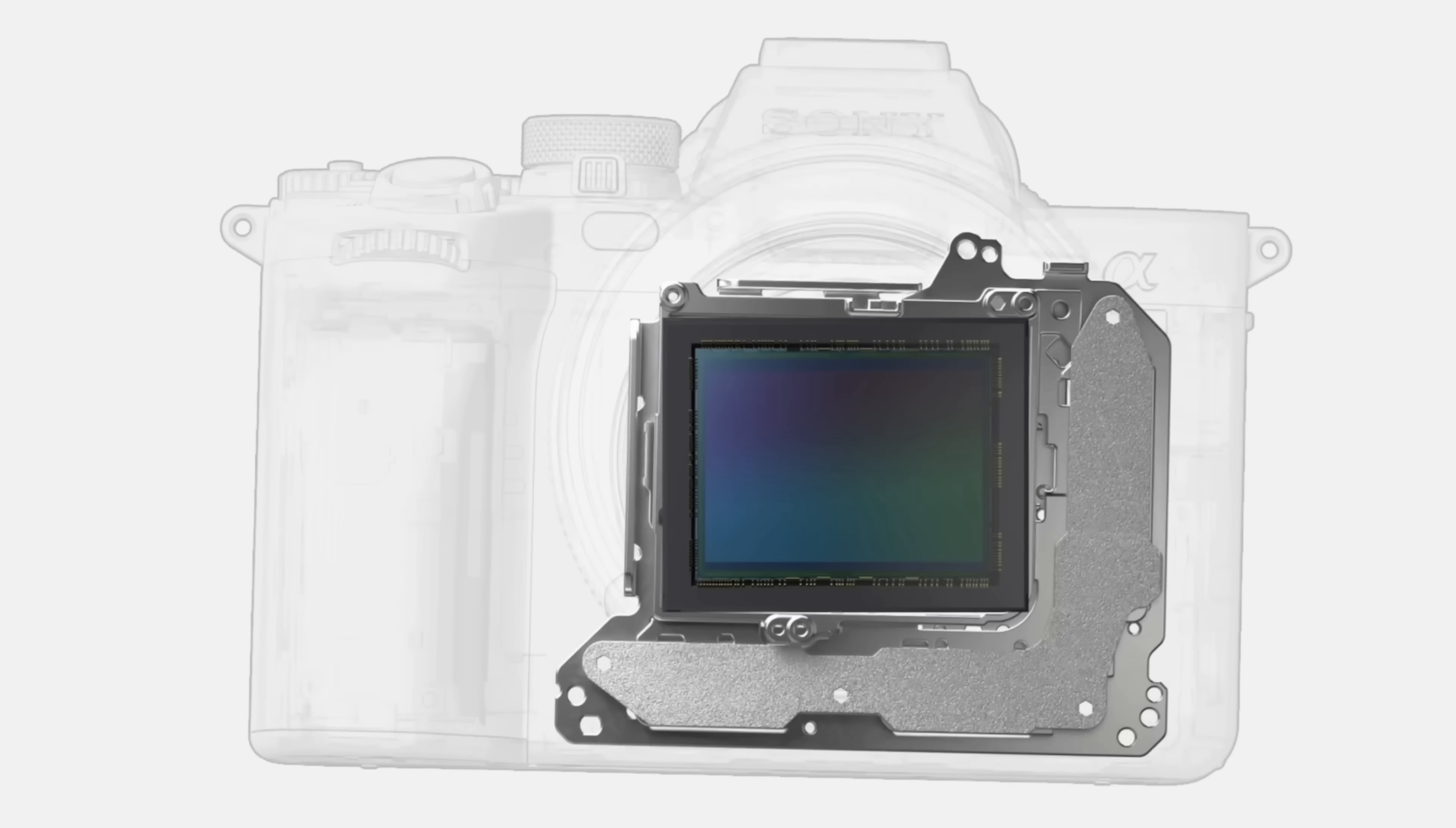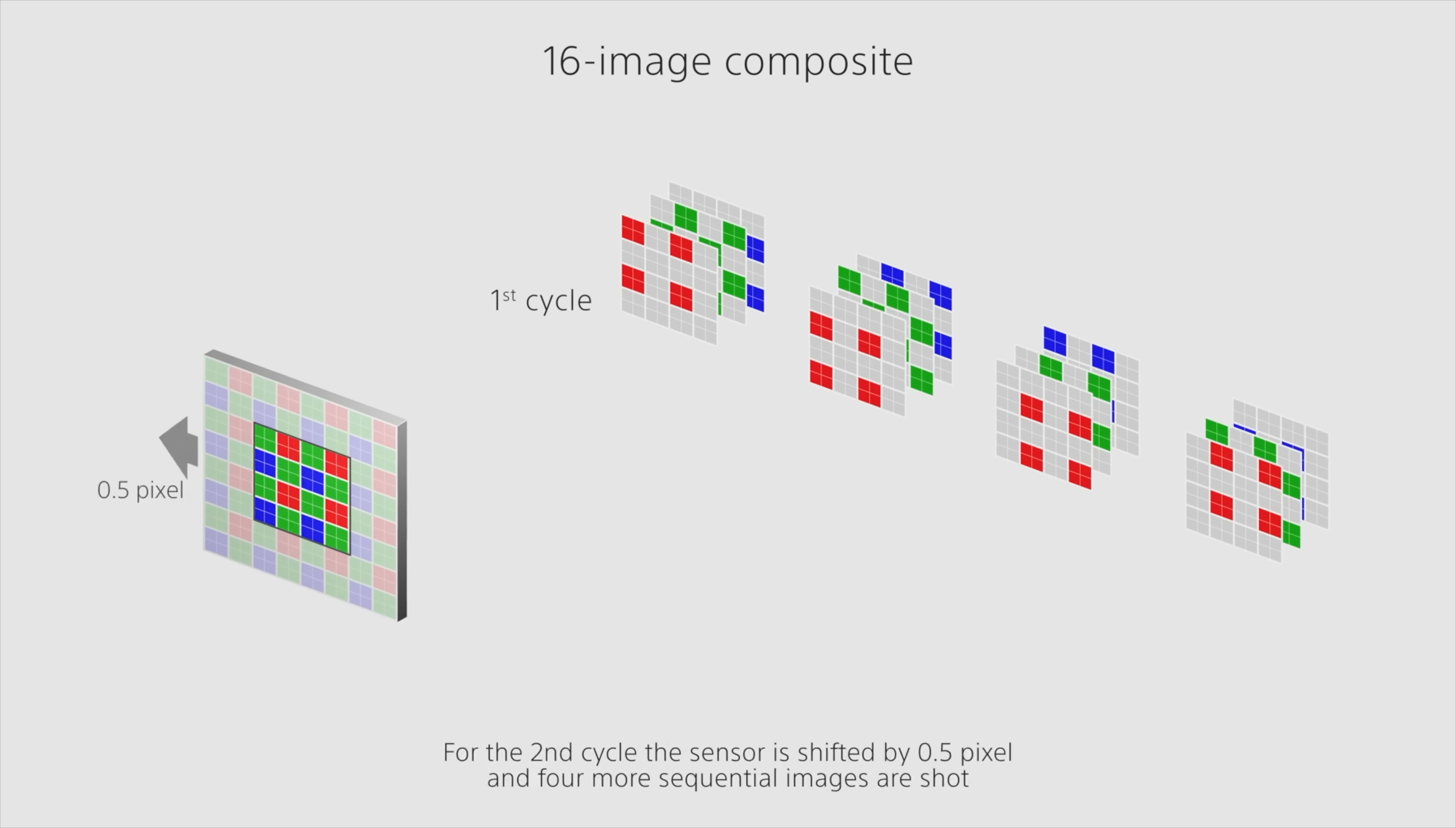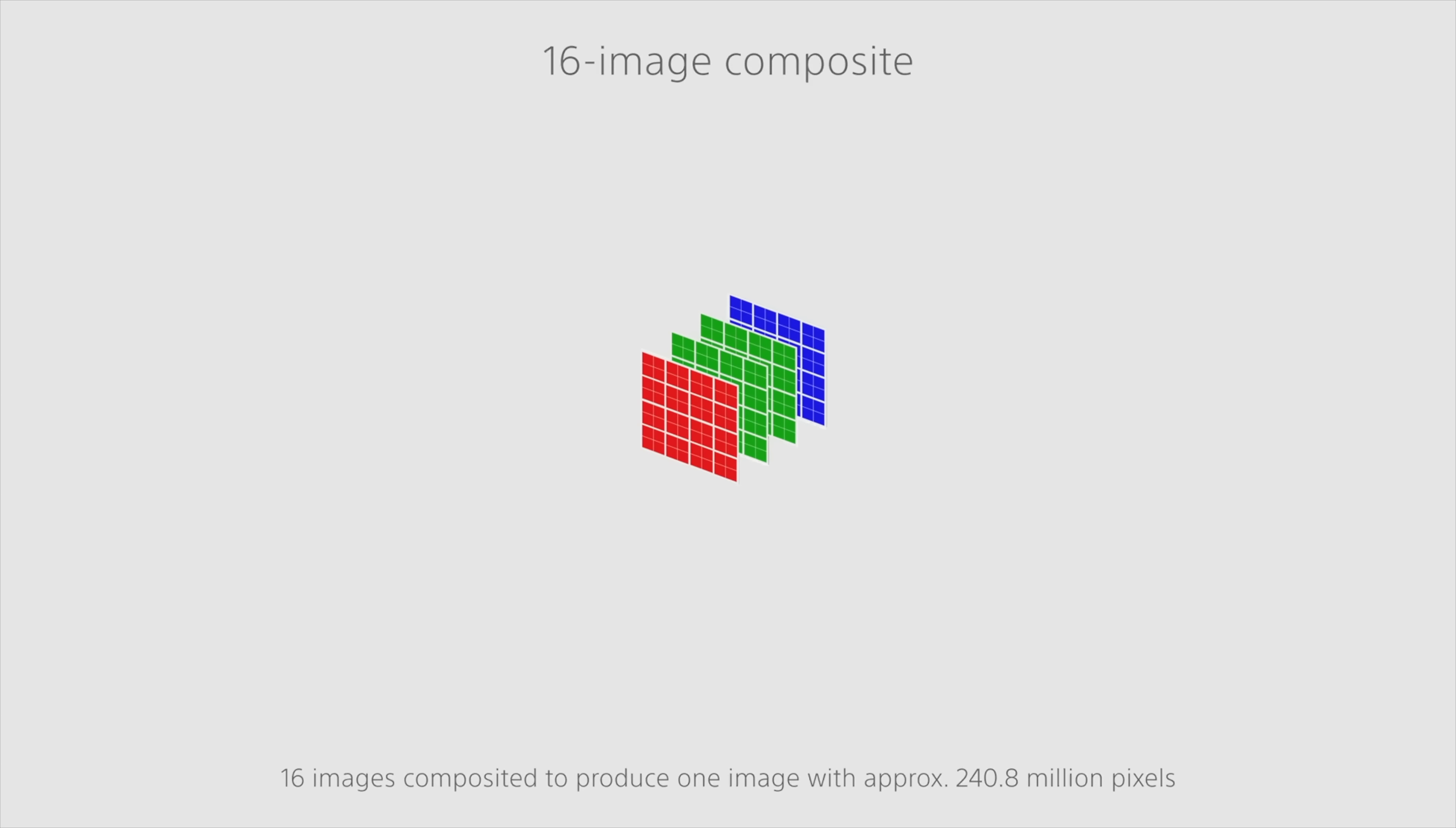Both features work in fundamentally the same way. They take advantage of the sensor's stabilization capability which moves the sensor around and they capture multiple different images, moving the sensor a fraction of a pixel between each image. Those images are then stacked to create sharper, higher-resolution images.